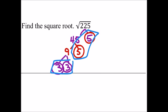So we could rewrite this as the square root of 3 times 3 times 5 times 5. We're looking for any numbers being multiplied by themselves.